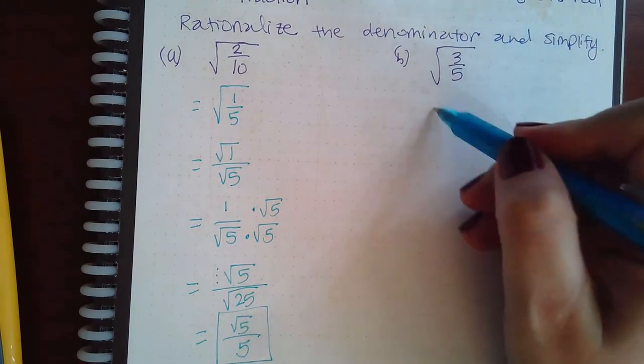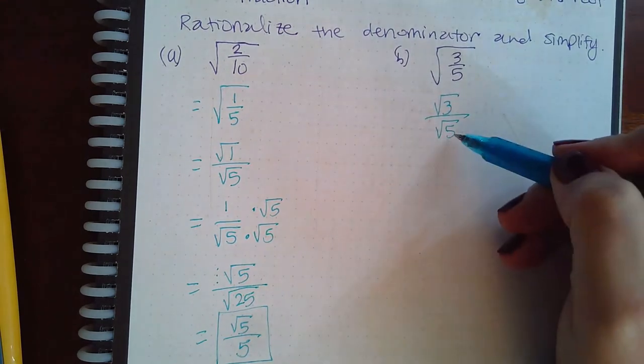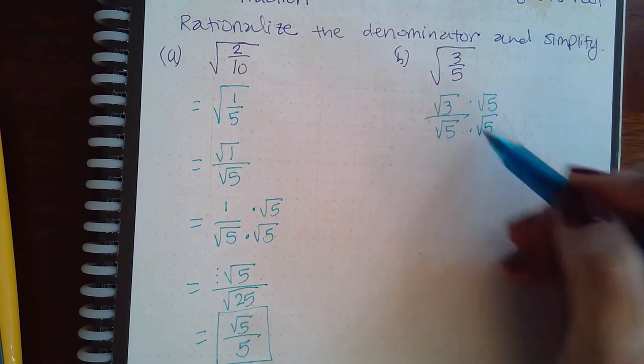Then we need to get rid of this, so we're going to use another square root of five top and bottom.